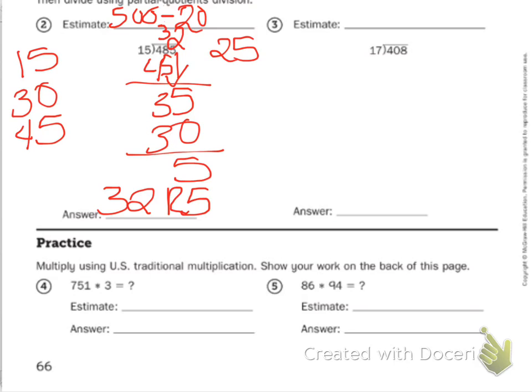Now you estimate and solve, and then multiply using U.S. traditional multiplication. Show your work on the back of this page. First estimate, so you might have 750 times 5 equals.